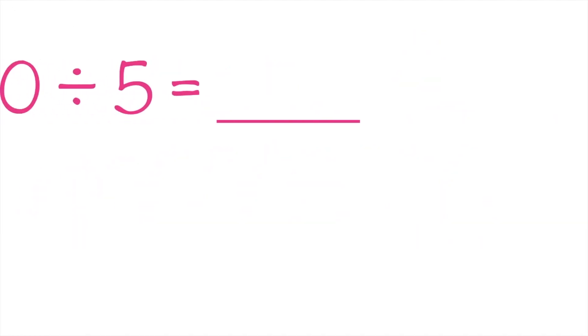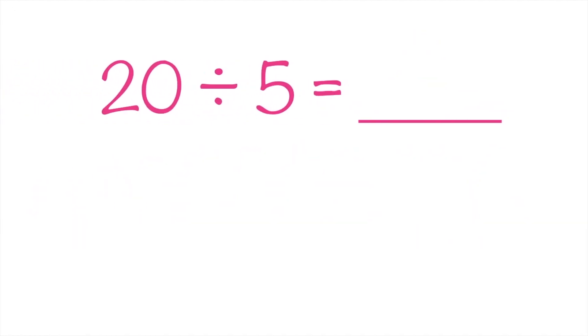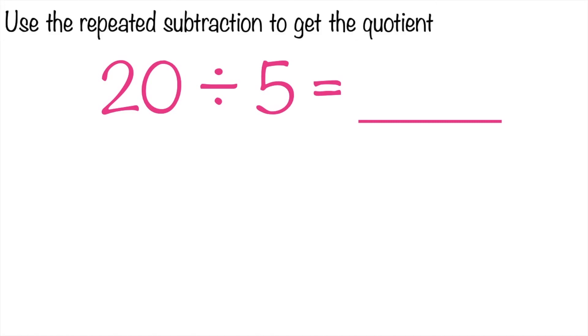How about if we have this? 20 divided by 5 equals blank. This time, children, use the repeated subtraction to get the quotient. Timer starts now!